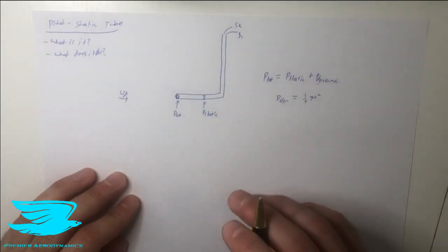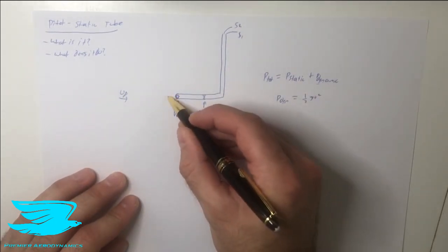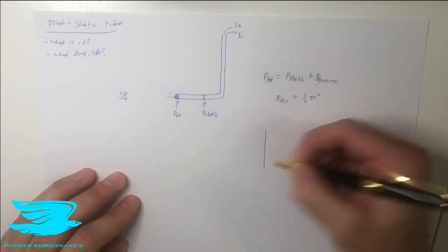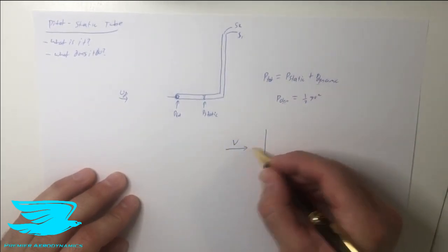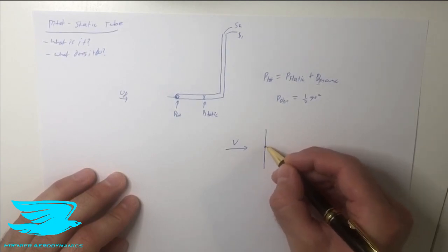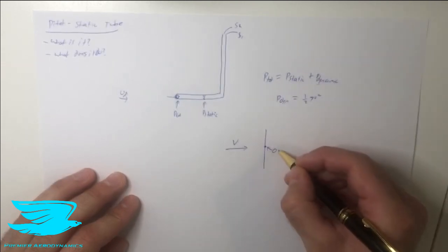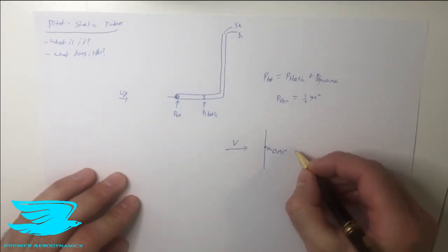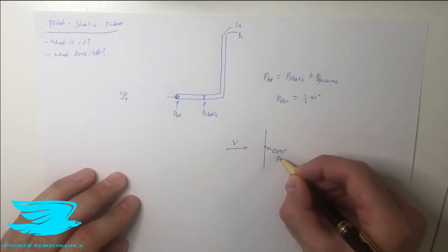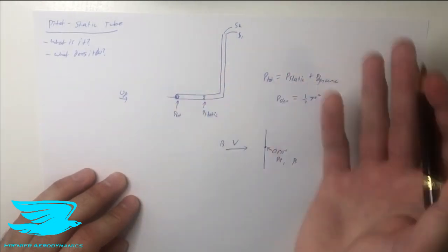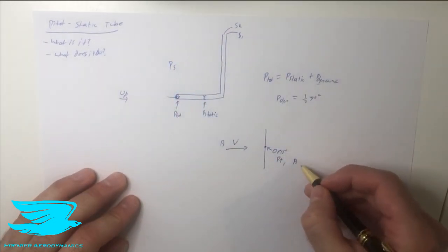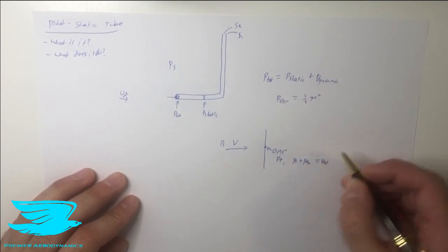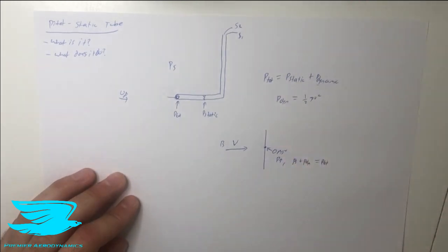Why does this work? Let's talk about the total pressure first. The front hole is aligned with the free stream flow, so all the flow is being rammed straight in. Think of it as a wall — the flow decelerates to zero. At that point, called the stagnation point, we have very high pressure. The pressure skyrockets because we not only have the static pressure from the free stream, but also the dynamic pressure being converted into measurable pressure — and that equals the total pressure.